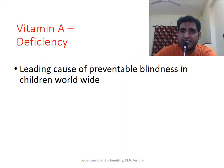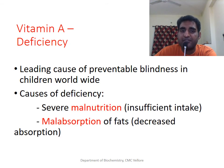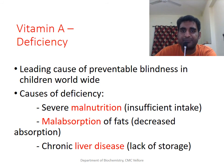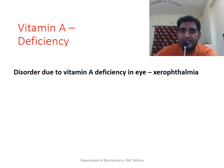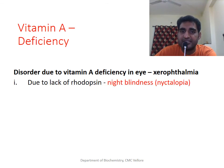Vitamin A deficiency is the leading cause of preventable blindness worldwide. Some of the causes for deficiency are severe malnutrition, fat malabsorption, and chronic liver diseases. The deficiency primarily affects the eye, and the disorder is called xerophthalmia. Due to lack of rhodopsin, it affects vision in low light, causing night blindness, also called nyctalopia.